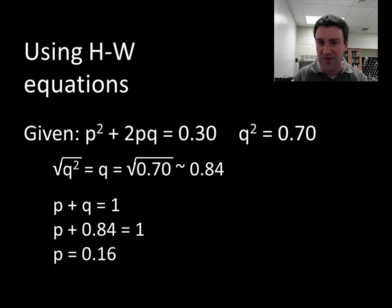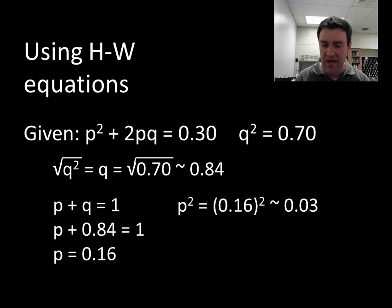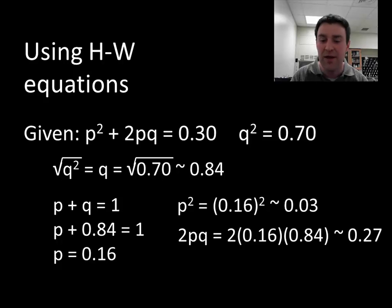Now I can figure out more specifically how many of the organisms must be homozygous dominant by just squaring P. The square of 0.16 is about 0.03, and I can also figure out how many of the organisms are heterozygous in genotype by doing 2PQ. 2 times 0.16 times 0.84 is about 0.27.